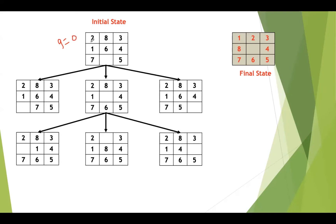Now we need to compare every tile in the current initial state with a tile in the final state. So, 2 is misplaced, 8 is misplaced, 3 is in the right position, 1 is misplaced, 6 is misplaced, 4 is in the right position, 7 is in the right position, and 5 is in the right position. No need to consider the blank space. So how many misplaced tiles do we have? Total 4. So h equals 4. Here g equals 0, h equals 4, and the sum of these two gives us the f value of 4.